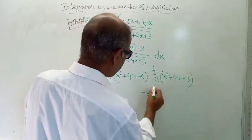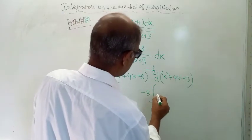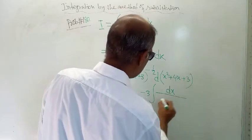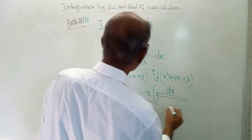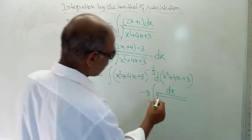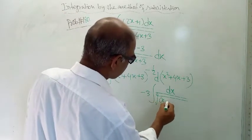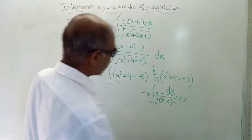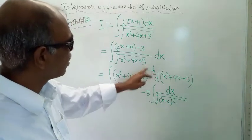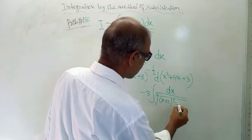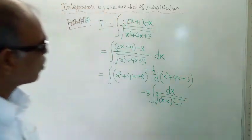So minus 3 integration of dx under root sign, then this expression is there. This can be written as (x + 2) whole square. So here 4 is coming, here 3 is there, so you need to write here minus 1.